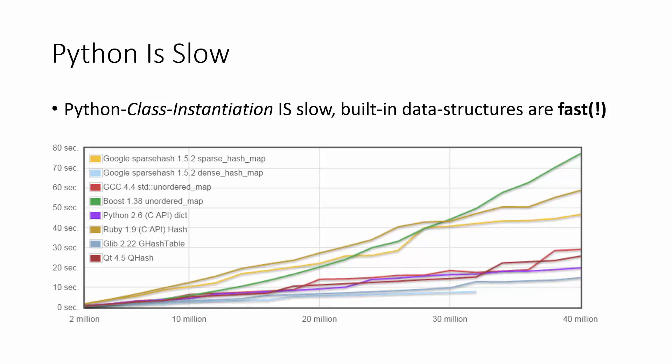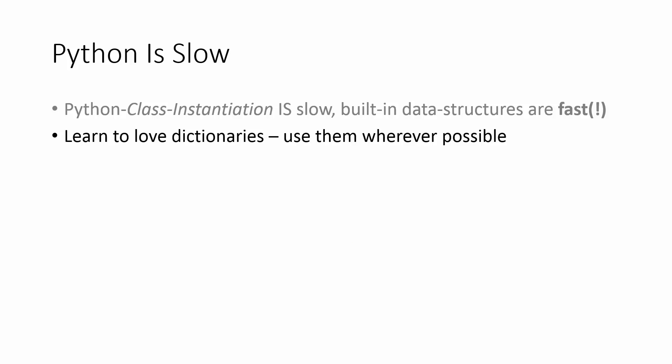For example, instantiating your own Python classes with hundreds and thousands of objects can be really, really slow. But as long as you stick to built-in data structures, it can actually be surprisingly fast. Dictionaries are implemented with a HashMap, and because Python uses dictionaries all over the place, it has a very highly optimized implementation of the HashMap — actually comparable to C and C++ implementations. So learn to love dictionaries and use them all over the place. They are really, really fast.